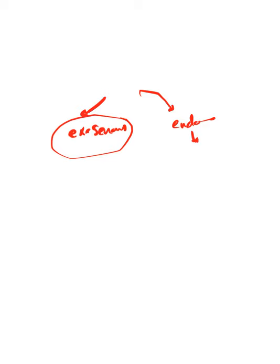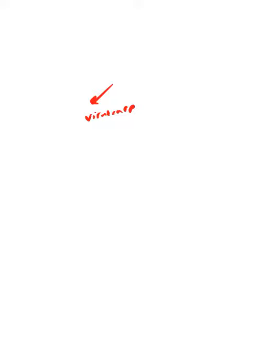Endogenous infection occurs in homeless patients, addicts, or those in very poor health status. Exogenous inoculation occurs by adhesion and is dependent on many factors: the virulence of the organism and the immunity of the host. If you have a very virulent organism and low immunity, infection is likely.